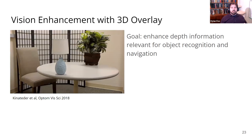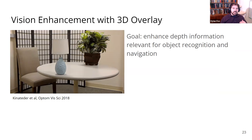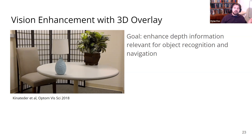Here's an example of prior work from our very own Perceptual Reality Lab leveraging AR for vision enhancement. This is from Max Kinnitator's research focused on enhancing depth information relevant for object recognition and navigation. Here's a typical visual scene: a table in the foreground, a lamp and a plant, a chair behind it, and a folding screen in the background. A scene like this can be very difficult to parse for people with low vision, because the detail that typically allows the visual system to segment different objects and surfaces is lost.